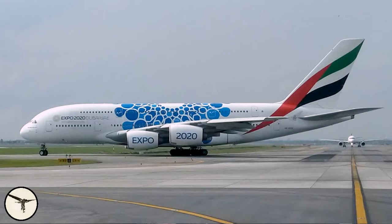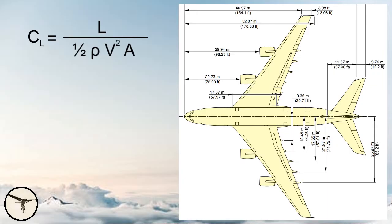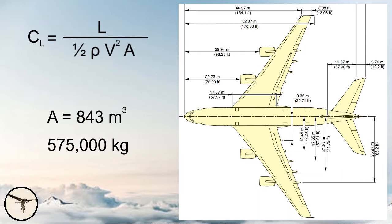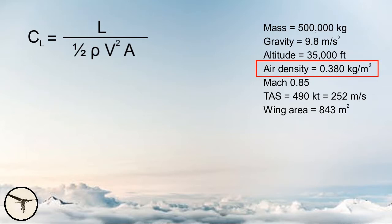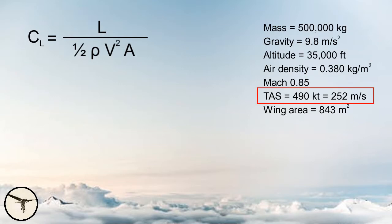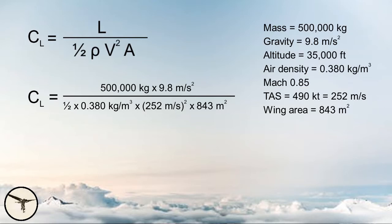Now, how about the Airbus 380? Compared to the Cessna 172, this airplane is huge — and so is the wing. The wing area is a whopping 843 square meters. The maximum takeoff mass is 575,000 kilos; for this calculation, we will let the mass be 500,000 kilos. We will cruise at Mach 0.85 at 35,000 feet. Up there, the air density is 0.380 kilograms per cubic meter. At Mach 0.85, the true airspeed is 490 knots or 252 meters per second. Putting the numbers into the formula gives a lift coefficient of 0.48 — and the angle of attack should be around 2 degrees, which is typical for cruise.